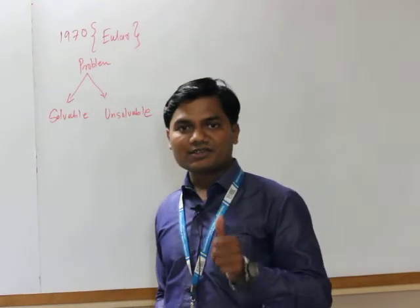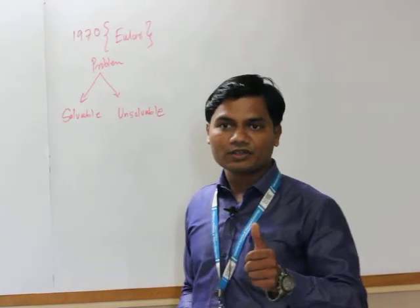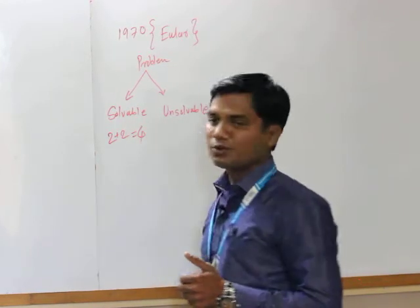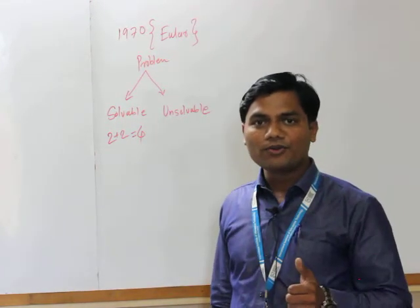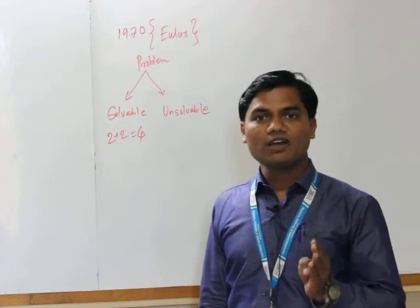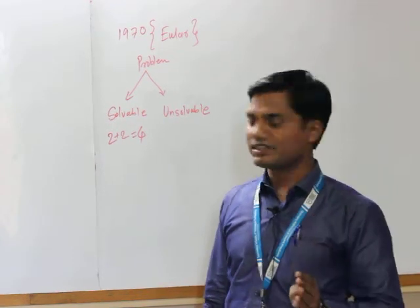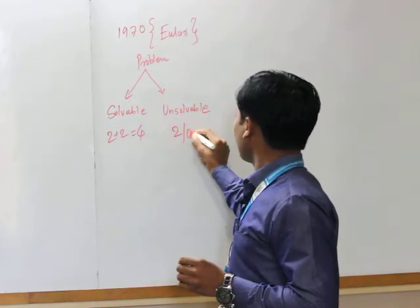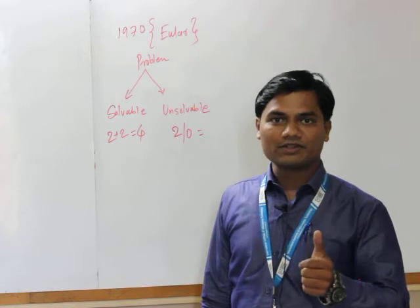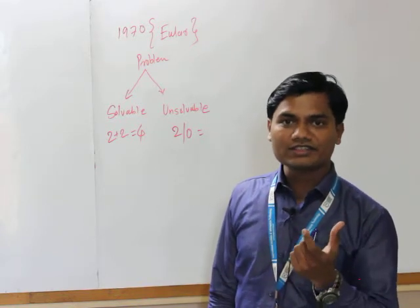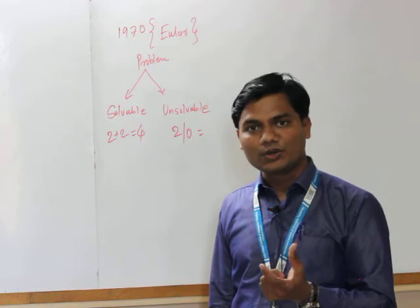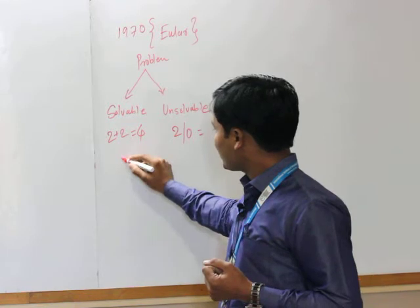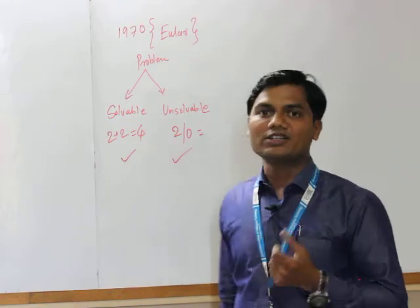Consider a simple example. If I ask you what is 2 plus 2, you can quickly give the answer: 2 plus 2 is 4. By taking some mathematical background and algorithm help, you can easily say 2 plus 2 equals 4. But if I ask what is 2 divided by 0, it will require some time. After taking some time, you can say 2 by 0 is a divide-by-zero error. So some problems are solvable and some problems are unsolvable.